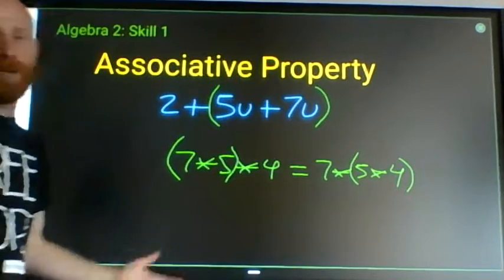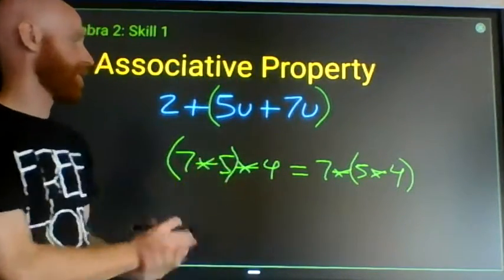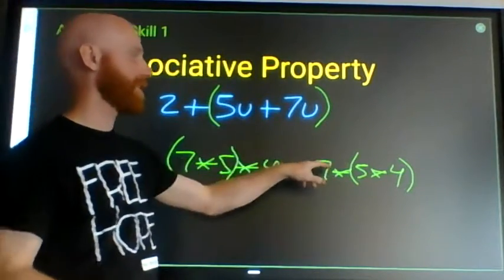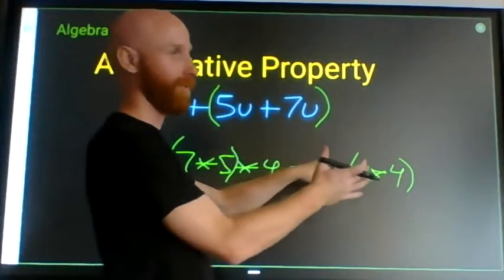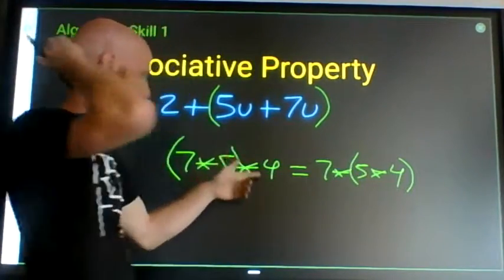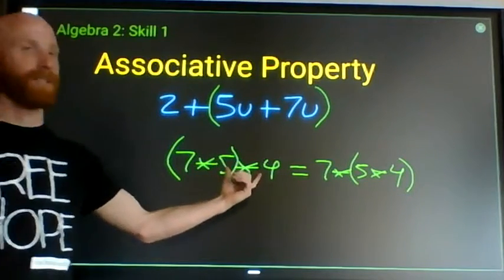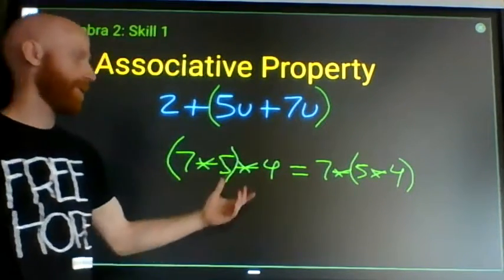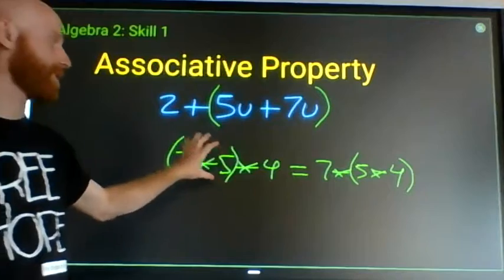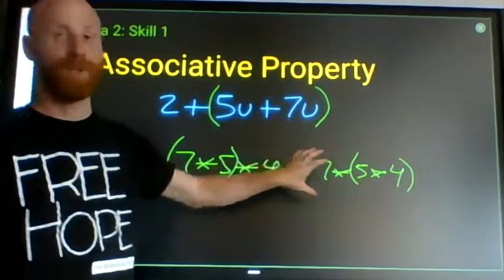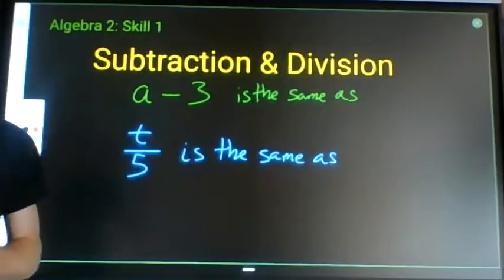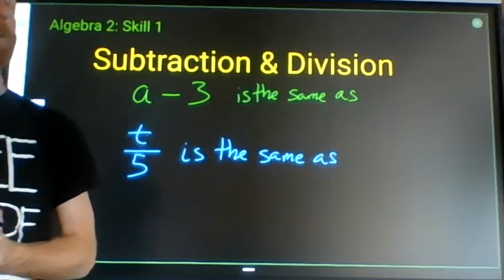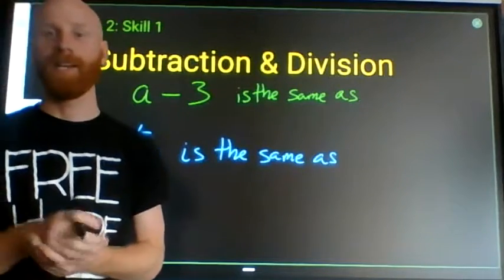For example: 7 times 5 is 35, times 4 gives the same exact answer as 7 times 20. So 7 times 5 times 4 equals 20 times 7 — those expressions give the same answer. This is helpful for mental math; it's easier to do 20 times 7 than 35 times 4, but both equal 140 because of the associative property.